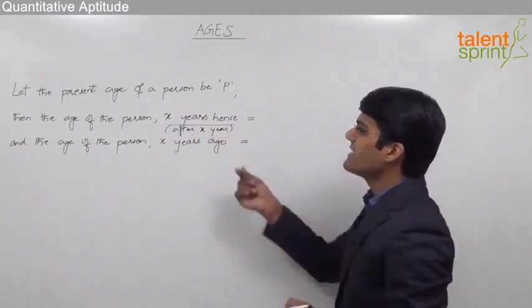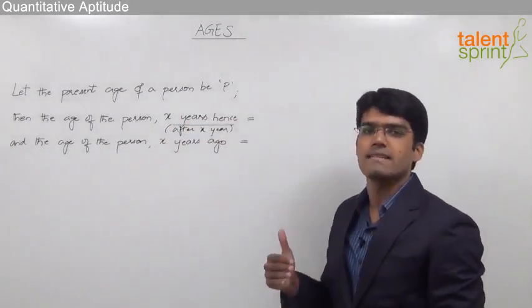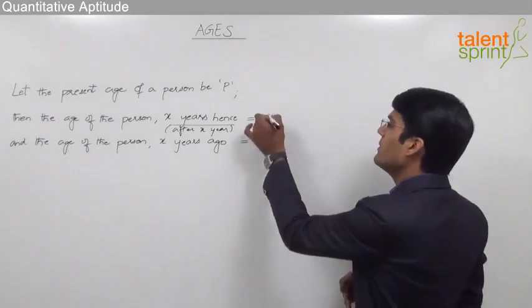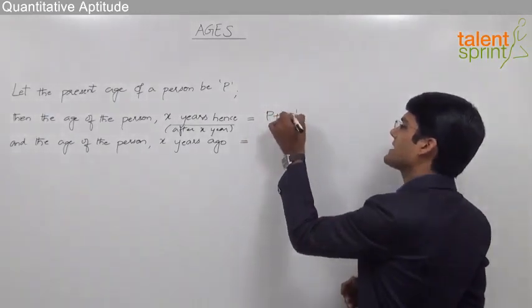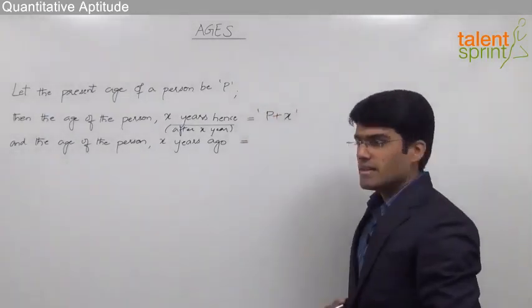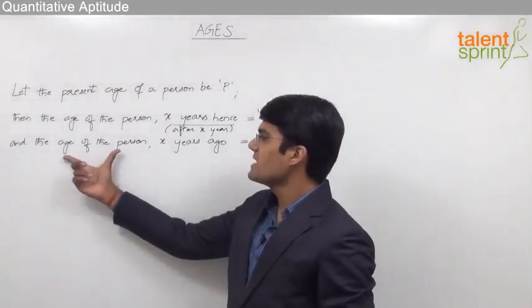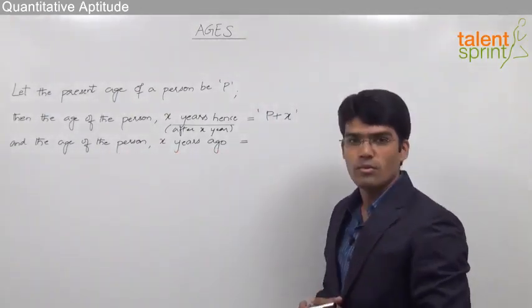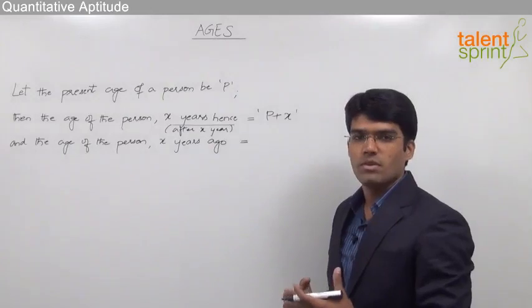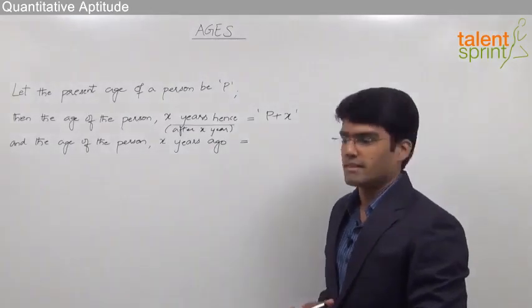So if the present age of a person is P, it is very clear that his age after X years will be equal to P plus X. The second point which we need to understand is the age of the person X years ago. X years ago, as we know, is nothing but before X years.